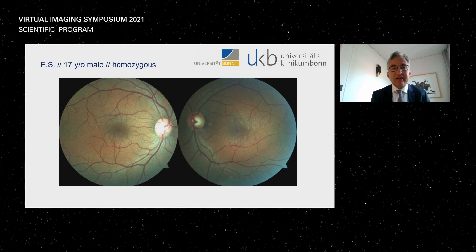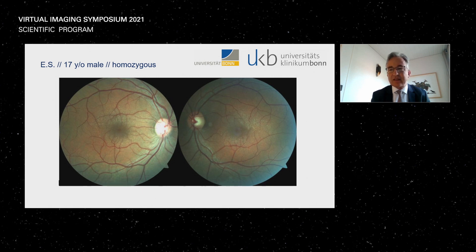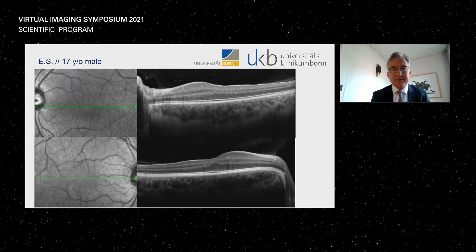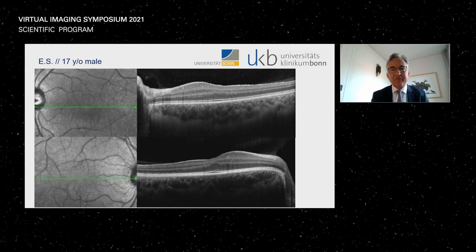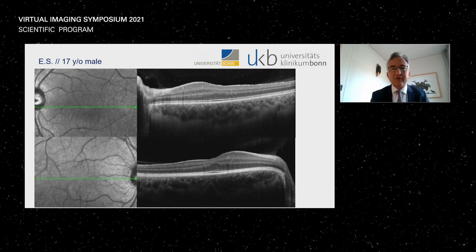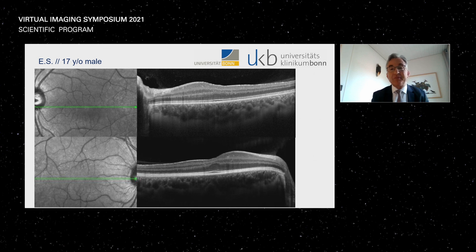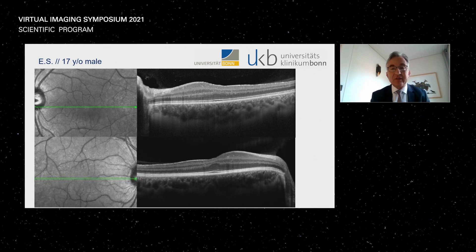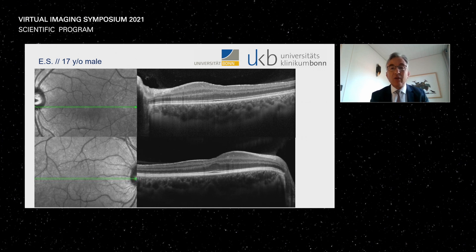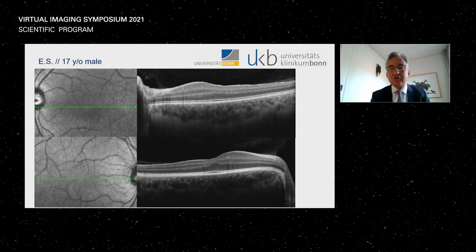Here is a homozygous male, 17 years old — the fundus image looks pretty normal. On OCT, there is the same peculiar phenomenon: a thinning of inner retinal layers temporal to the fovea, an absent foveal pit, and inner retinal layers present at the foveal tissue, while the ONL widening and outer segment elongation look pretty normal.